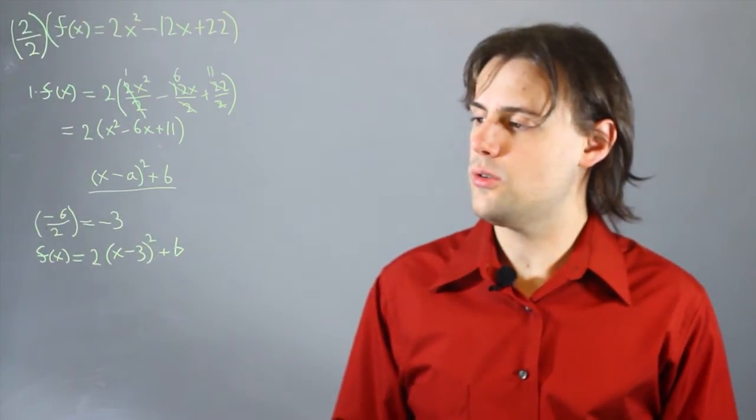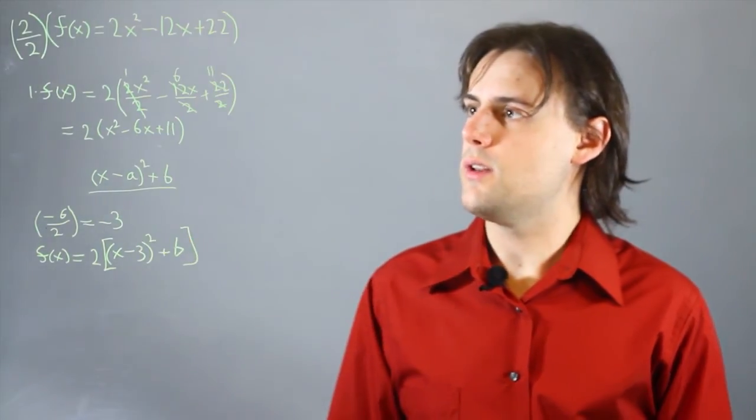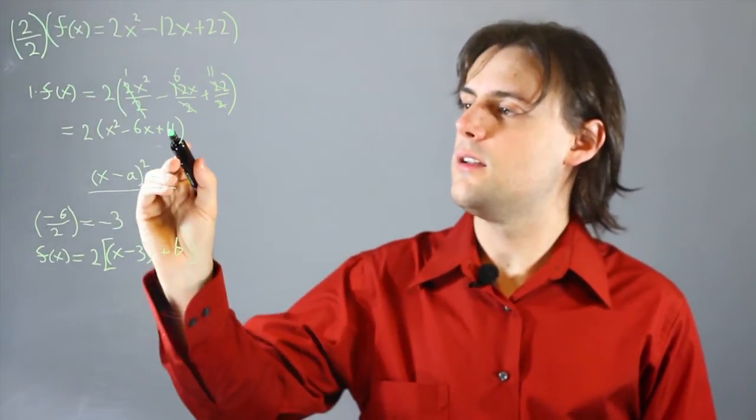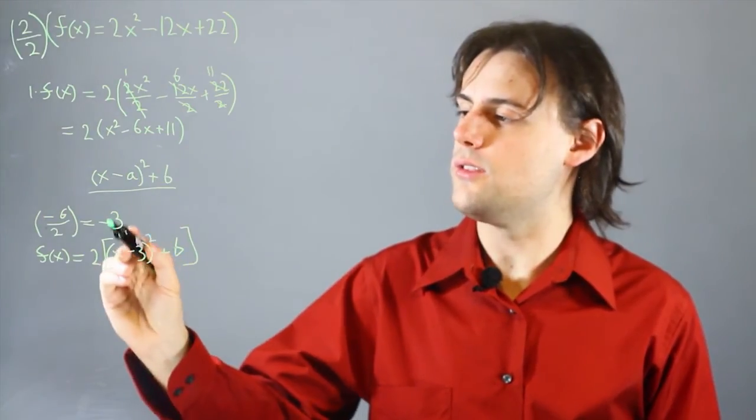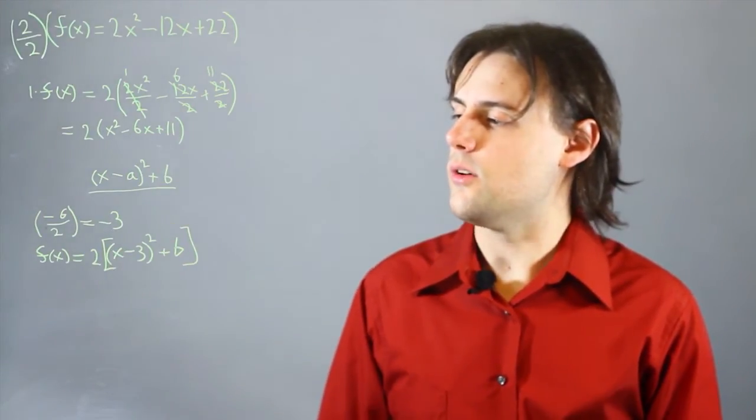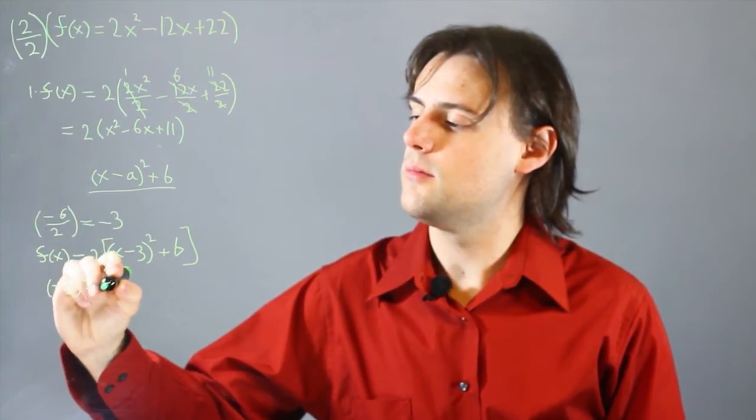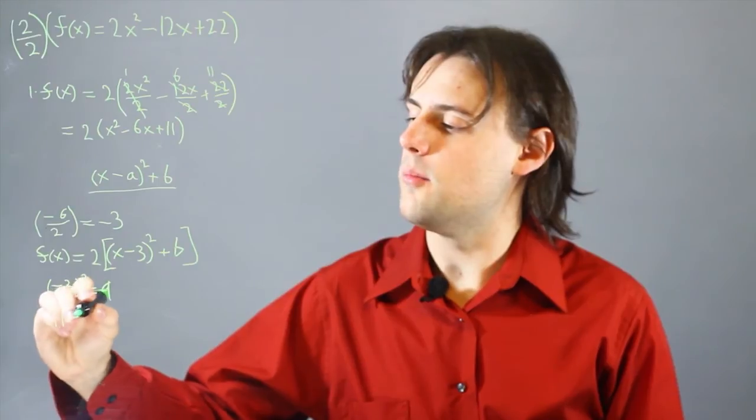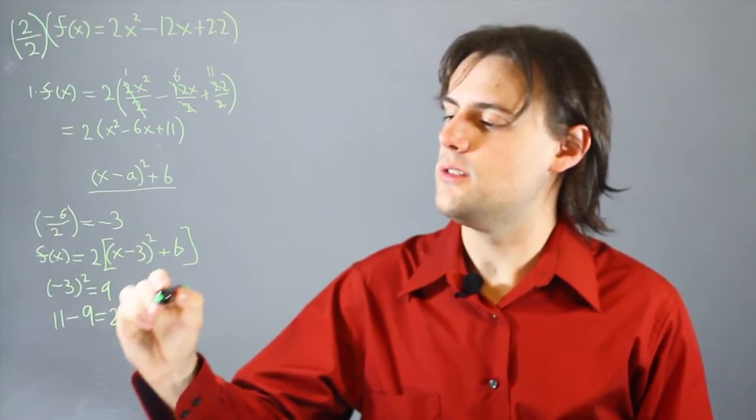In order to determine this constant b, we need to subtract from this constant the square of this number. So, if we square negative 3, we get 9, and so 11 minus 9 is equal to 2. And this is our b.